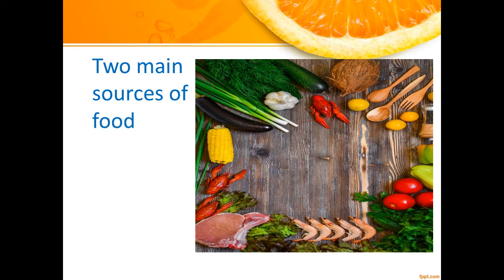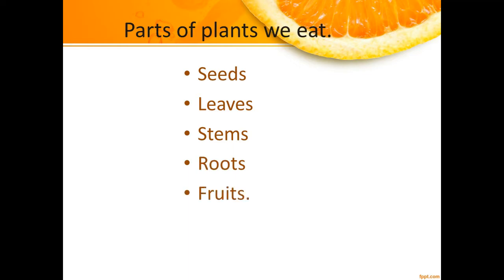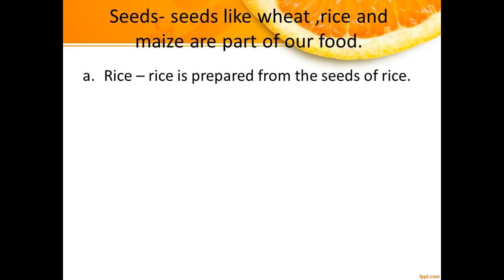We get our food mainly from two sources: plants and animals. We eat the different parts of plants, like seeds, leaves, stems, roots, and fruits. Which seeds do we eat daily? Seeds like wheat, rice, and maize are part of our food.